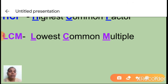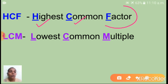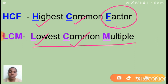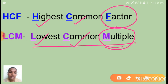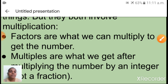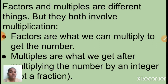You know the meaning of 'highest' and 'common.' Do you know the meaning of 'factor'? And in the second term, 'lowest' and 'common' you know — but what is meant by 'multiple'? I will teach you now. I hope you had studied about factors and multiples in your fifth standard. Can you recall now? Factors and multiples are different things, but they both involve multiplication.